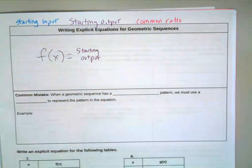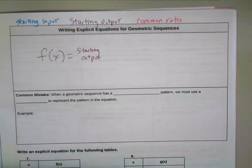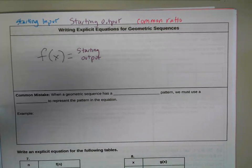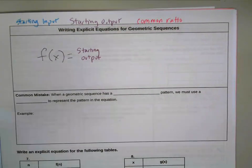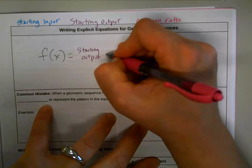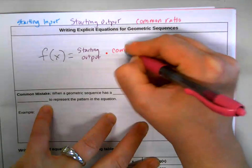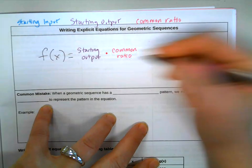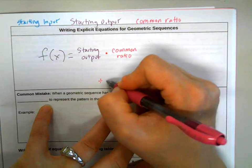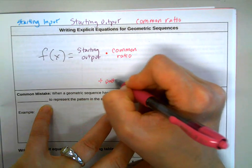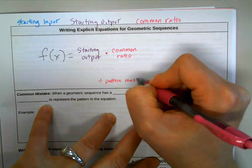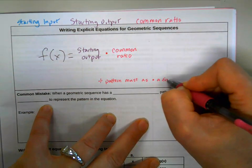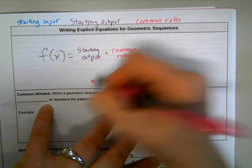But this time we are multiplying by our common ratio each time. We take the first output in our table and we multiply it by our common ratio, and then we multiply it again and again and again. So I'm going to write times the common ratio. So remember, it's really important that it's always in multiplication. Very important.